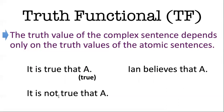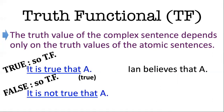So those two connectives in blue are truth functional. One is the truth function that just repeats the value of the input; the other is the truth function that negates or inverts the value of the input. They're both truth functional because knowing the truth value of the input alone allows you to know the truth value of the output sentence — in one case it's true, and in the other case it's false.